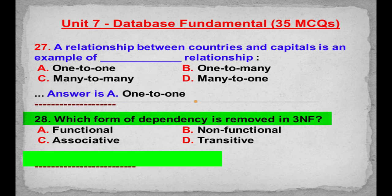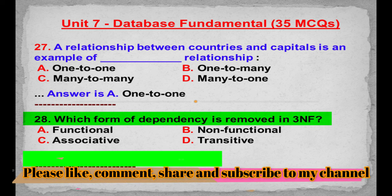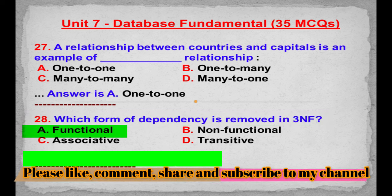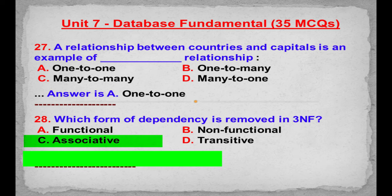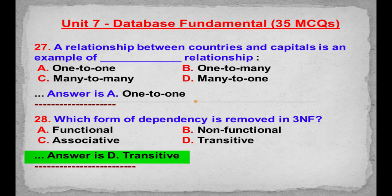MCQ number 28: Which form of dependency is removed in 3NF? Option A: Functional. Option B: Non-functional. Option C: Associative. Option D: Transitive. Correct answer is Option D: Transitive.